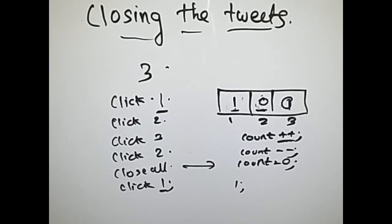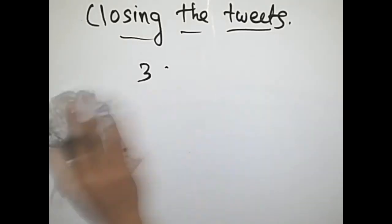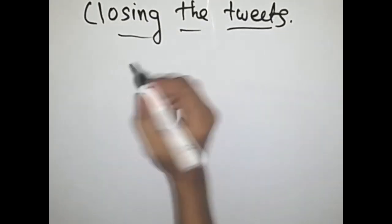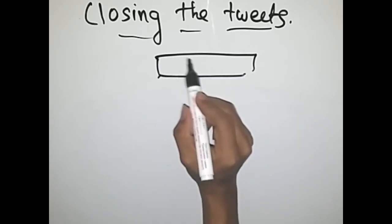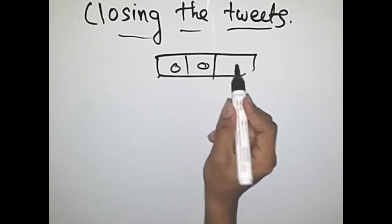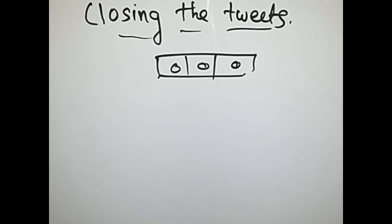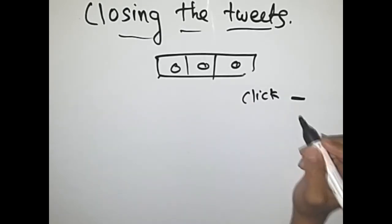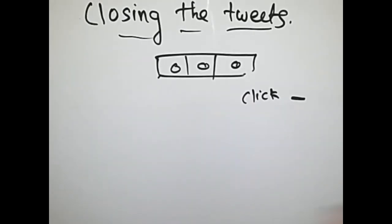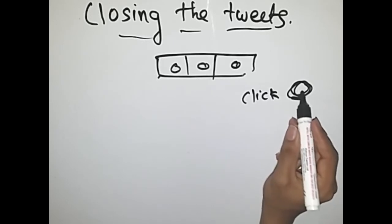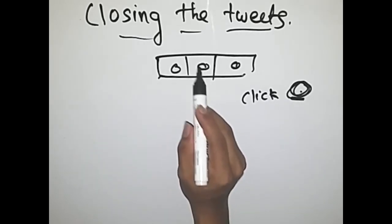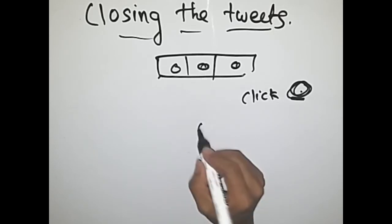Let me summarize the logic for the code. Initially, take an array of the number of elements given — in this case three — and initialize all elements to zero. Then take input in various ways: accept a string from the user, either 'click' or 'close all'. If we get 'click', we accept an integer for the tweet number. If it's 'close all', we don't accept any integer. Then check the index for the click number: if it's already zero, make it one and do count plus plus.